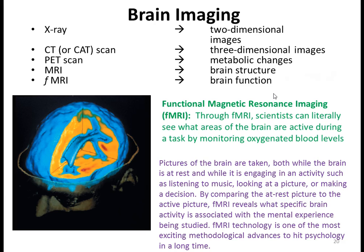The functional MRI is particularly exciting — it lets us look at blood flow within the brain. Pictures are taken both while the brain is at rest and while engaging in an activity like listening to music, looking at a picture, or making a decision. By comparing the resting picture to the active picture, the functional MRI reveals what specific brain regions are associated with particular mental experiences. It's been a huge breakthrough in studying the brain.